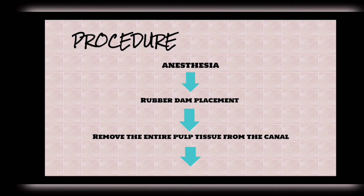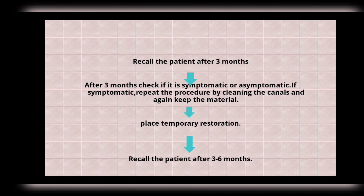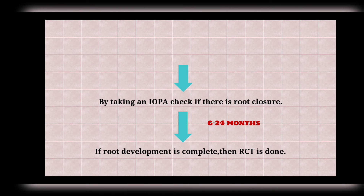For the apexification procedure: give proper anesthesia, place a rubber dam, then remove the entire pulp containing debris and necrotic tissue. Place materials such as calcium hydroxide or MTA, and recall the patient after three months. At recall, check if asymptomatic or symptomatic — if symptomatic, repeat the procedure by cleaning the canals again, placing material, and placing a temporary restoration. After three to six months, take an X-ray to check if there is root closure, which can also be verified using a file. Once root development is complete, RCT is done.